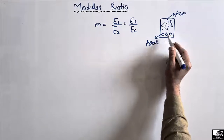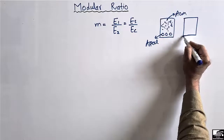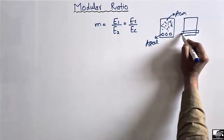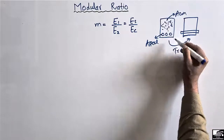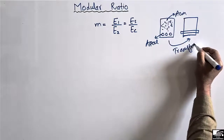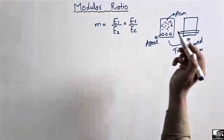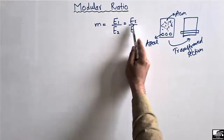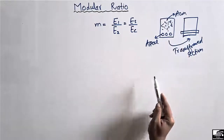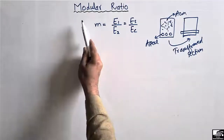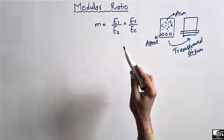We want to convert these two materials into one equivalent material using the modular ratio. This gives us the transformed section for the beam. The transformed section is obtained by using the elasticity values of the two different materials to create an equivalent single material.